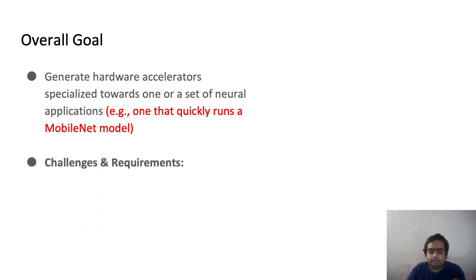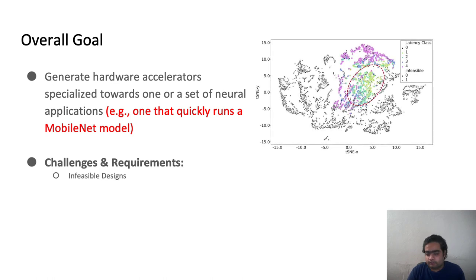Now, there are several important challenges that need to be handled here. First, we need to be able to find good designs, which are in an absolute sense very few in number, navigating in a sea of infeasible designs, as you see in the figure. Second, we need to be able to respect all sorts of design constraints, such as chip area or chip power constraints that the designer imposes, and these are hard constraints. We cannot violate them at all.